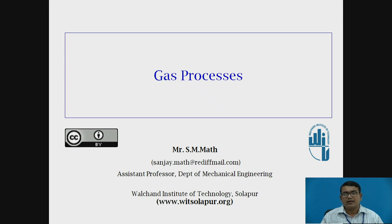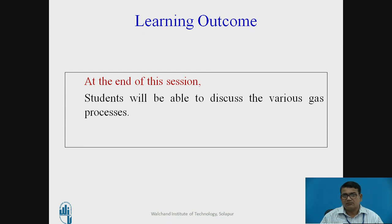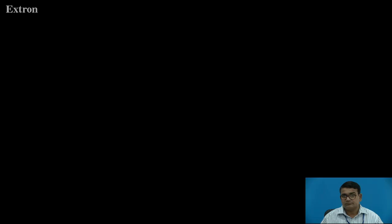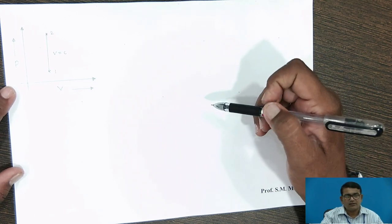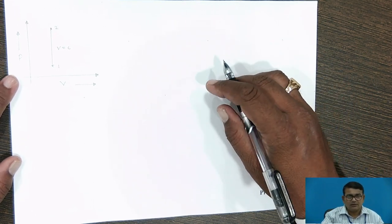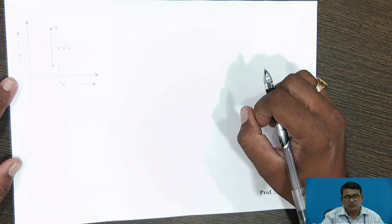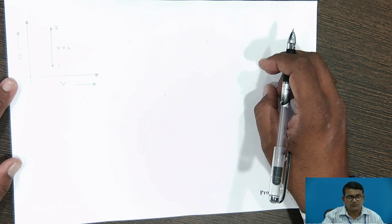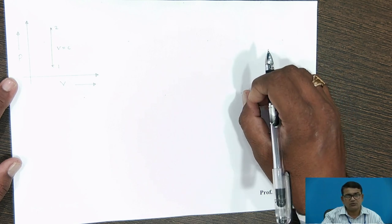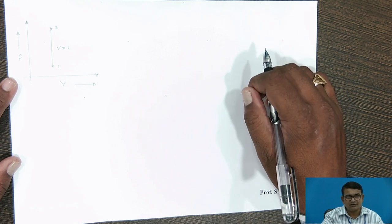Today we deal with gas processes. The outcome from this topic is that students will be able to discuss the various gas processes. Basically there are different types of processes when gas is heated or heat is to be removed. These include constant pressure, constant volume, and constant temperature processes, involving transactions related to heat, work, internal energy, and enthalpy.